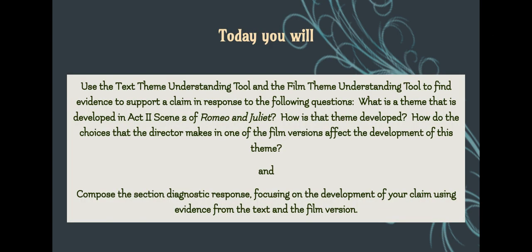Today you will use the Text Theme Understanding Tool and the Film Theme Understanding Tool to find evidence to support a claim in response to the following questions: What is a theme that is developed in Act 2, Scene 2 of Romeo and Juliet? How is that theme developed? How do the choices that the director makes in one of the film versions affect the development of this theme? You will compose the Section Diagnostic Response, focusing on the development of your claim using evidence from the text and the film version.